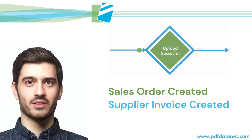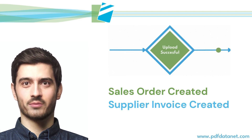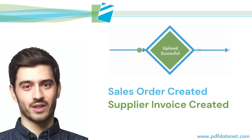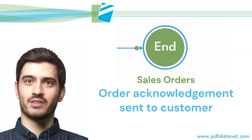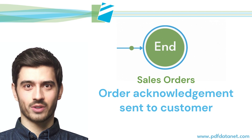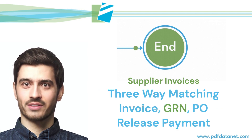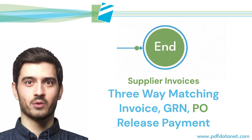The integration process will confirm that the order or invoice has been created. As part of the final step, an email can be sent to the customer to confirm receipt of their order. For supplier invoices, three-way matching of the invoice, GRN, and original PO can be used to release the invoice for payment.